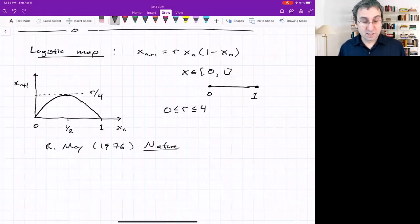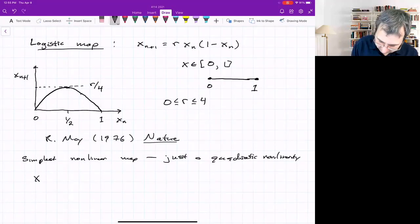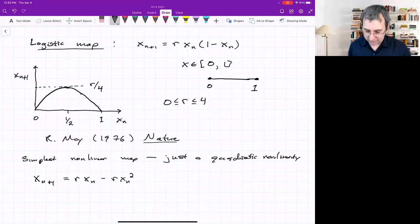In some sense, it's the simplest nonlinear map because all it has is a quadratic nonlinearity. X_{n+1} equals, if we write it out, rX_n minus rX_n squared. If it was just rX_n it'd be a linear map, easier to analyze, but it's not linear. What happens? What's the big deal with this map?